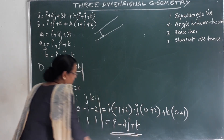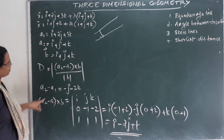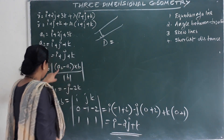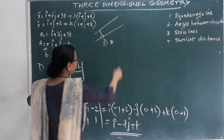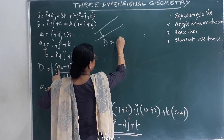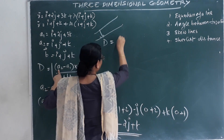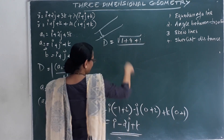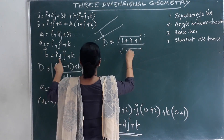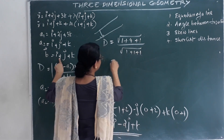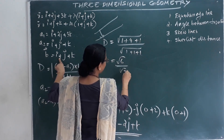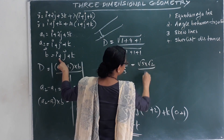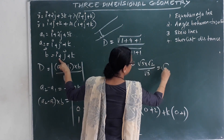That gives i minus 2j plus k. The distance equals the modulus of this cross product divided by modulus of b. That is root of (1 plus 4 plus 1) divided by root of (1 plus 1 plus 1), which is root 6 divided by root 3, equal to root 2. The answer is root 2.